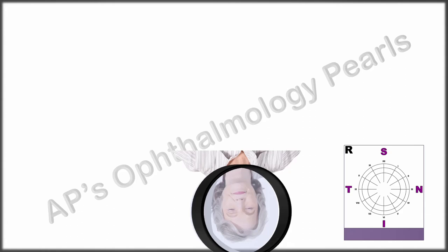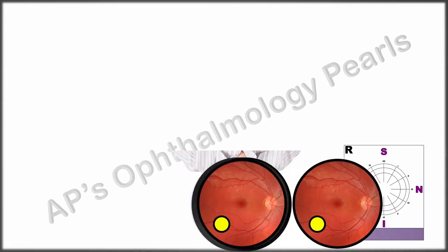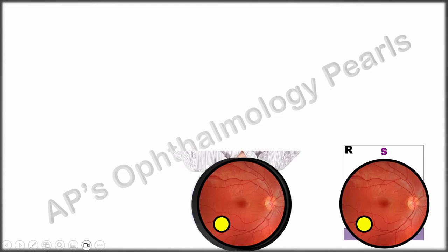Now do the indirect ophthalmoscopy and note what you see. Draw on the chart exactly what you see as you see it.